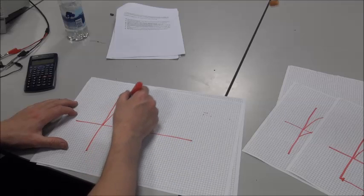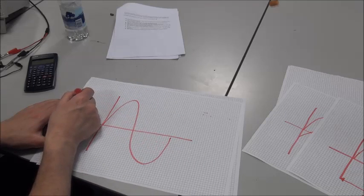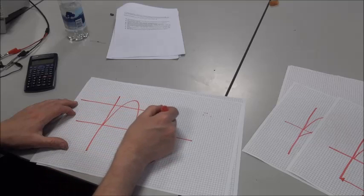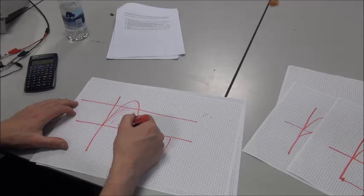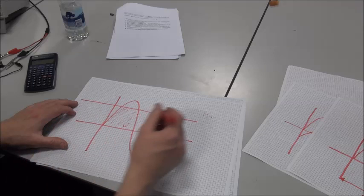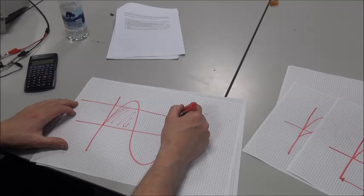To work out RMS, the RMS value of a waveform, its root mean square value of a sine wave, is this part here, which gives the same heating effect as a DC supply.